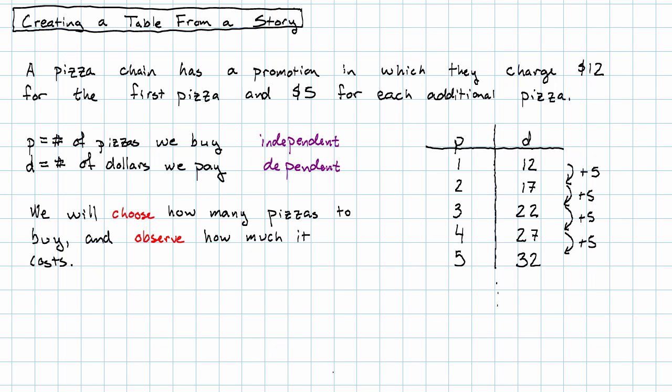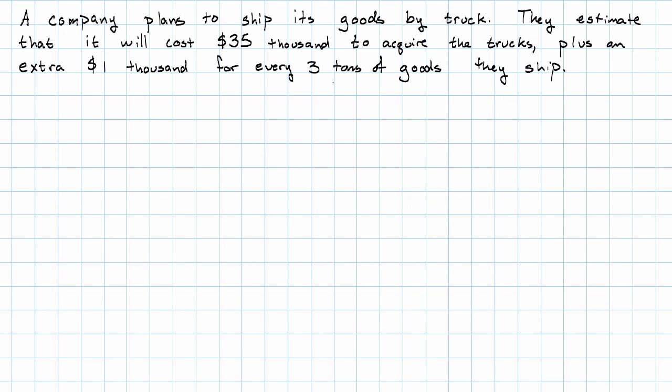Here's another example. Suppose a company plans to ship its goods by truck. They estimate it'll cost $35,000 just to get the trucks, plus an extra $1,000 for every three tons of goods they ship.